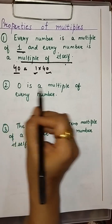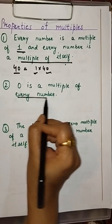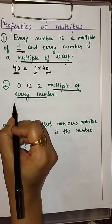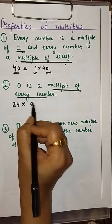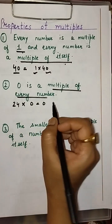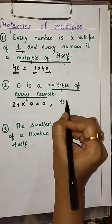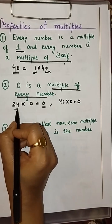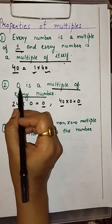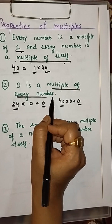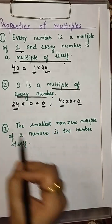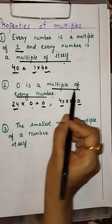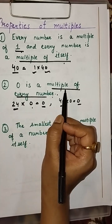Second property: 0 is a multiple of every number. We can write 24 into 0 is 0, and 40 into 0 is 0. So 0 is a multiple of 24 and a multiple of 40. Since we can write any number multiplied by 0 to give 0, we can say 0 is a multiple of every number. This is the second property of multiples.